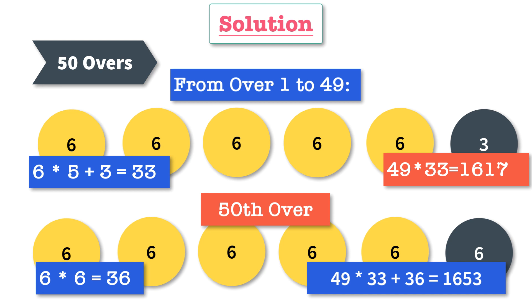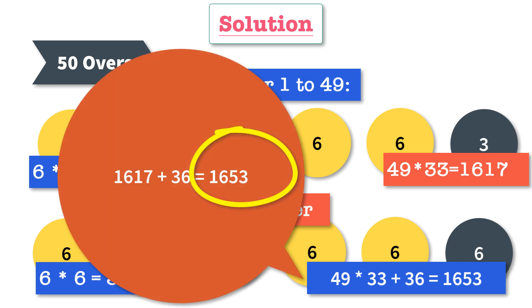To repeat the solution: the total number of overs in a one-day international cricket match is 50. A batsman can score a maximum of six runs per ball, but if he scores six on the last ball, the strike changes to the other batsman. So the maximum on the last ball is three runs, meaning in every over a batsman can score 33 runs. In 49 overs the total score is 49 times 33, which is 1617. In the last over he can score 36 runs as there is no need to change strike. So the total score is 1617 plus 36, which equals 1653.